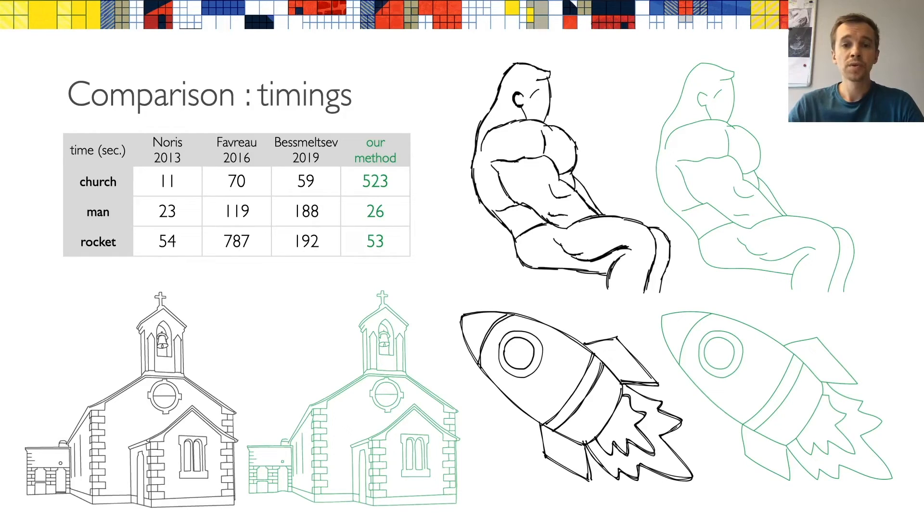In terms of total running time, our method is similar to previous vectorization methods. We might take longer on complex inputs, such as this church, but we are often faster than other methods on simpler sketches with fewer strokes.